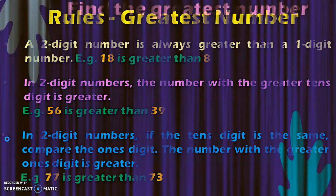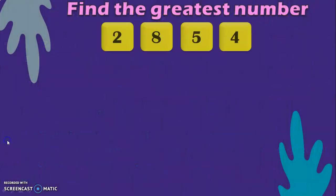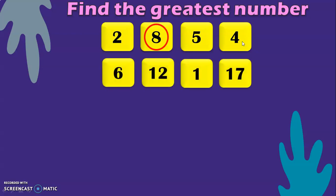Let us move on to the exercises for identifying the greatest number. Here we are given four single-digit numbers: 2, 8, 5, and 4. The greatest number in this series is 8. Next, we are given another four numbers: 6, 12, 1, and 17.